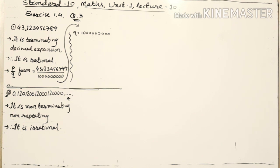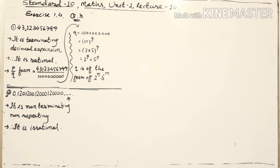Going back to question 1, the q value is 1 followed by 9 zeros, which is 100 crores. Its prime factorization is 10 raised to 9, meaning 2 raised to 9 into 5 raised to 9. Therefore we can say q is of the form 2 raised to n into 5 raised to m — this is why the decimal expansion is terminating.